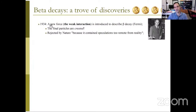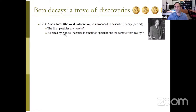In 1932 the real neutron was discovered by Chadwick, and then Pauli's neutron was renamed 'neutrino' by Amaldi and Fermi. In 1934 came the very important paper by Fermi, where he introduced the weak interaction — the theory that we know today. Pauli thought the neutrino was inside the nucleus before the decay; Fermi made the big change, saying the final particles are actually created — they didn't exist before. Remarkably, this paper was rejected by Nature for containing 'speculation too remote from reality.'